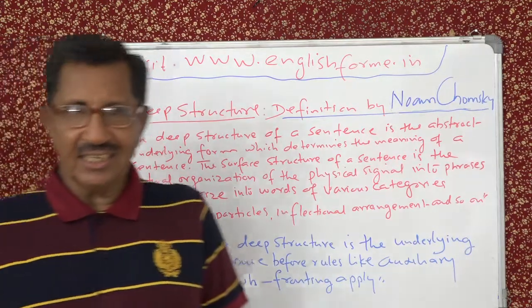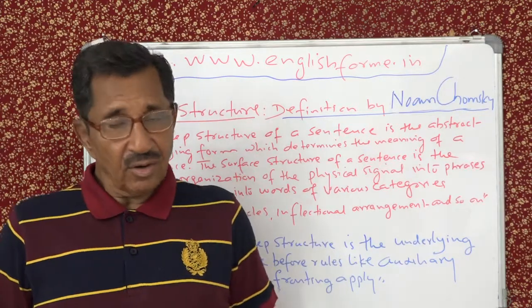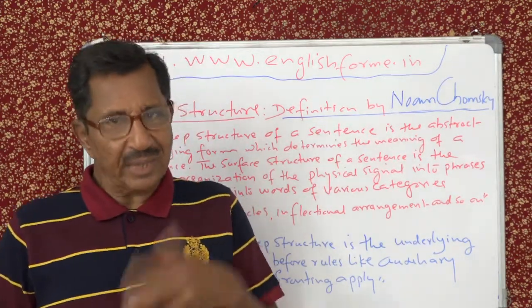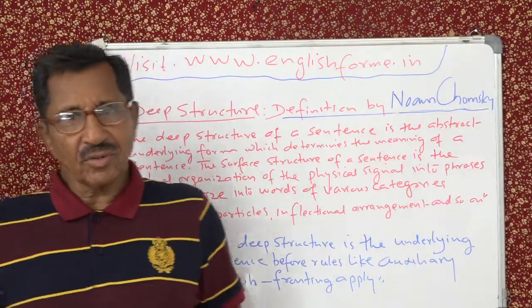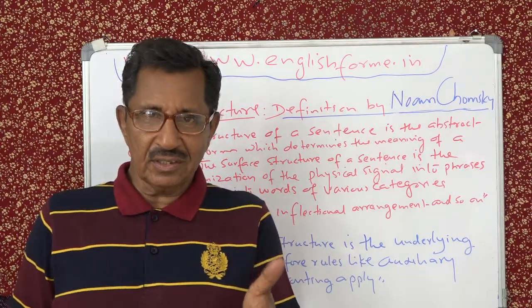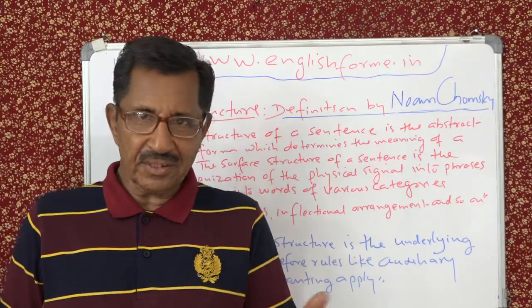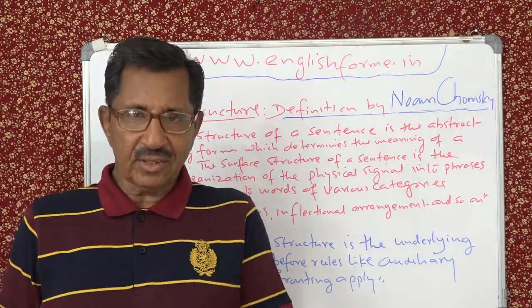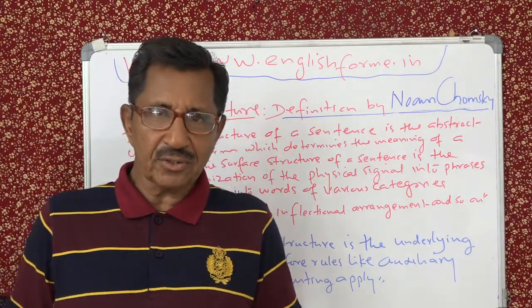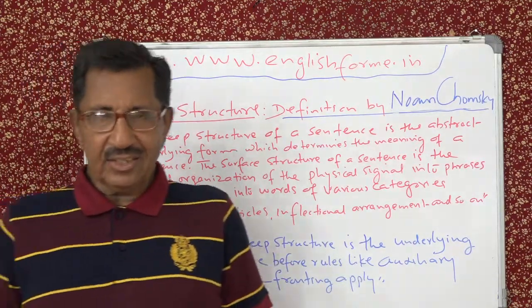These things we have already seen. In our second lecture, we saw what 'generative' means — generative means predicting. We also saw what 'transformation' means — that is, changing one form of a sentence to another form. The example is the active-passive relationship. An active sentence is taken, you apply some rules, the active sentence is the input, and you get the output as the passive sentence.